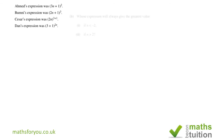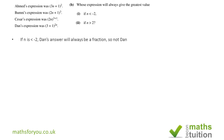For Section B part i, we want to find which expression gives the greatest value. Looking at Dan first: if n is less than −2, suppose n=−3, then 3+1=4, and 4 to the power −6 gives us something like 1 over 4096 — so it's not Dan.